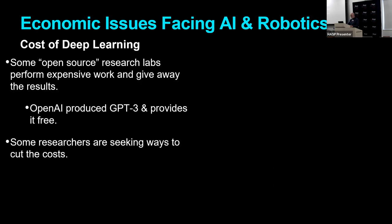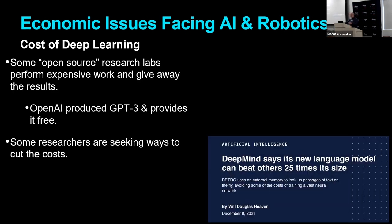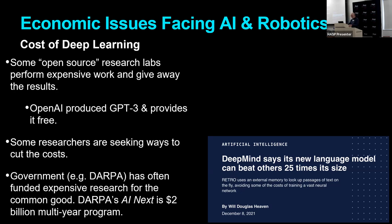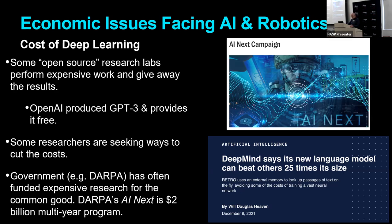Also, some researchers are seeking ways to cut the costs. Google's research lab in London, called DeepMind, has a new language model that can beat others 25 times its size, they claim. If size is proportionate to cost, that means their language model could cut the cost of one training run for GPT-3 from $12 million to maybe half a million — still a little too rich for my blood, but a lot of organizations could afford that. Also, government has often funded expensive research for the common good. DARPA's AI Next program is a $2 billion multi-year program aiming to provide funding for fundamental research to improve AI capabilities and cut the cost. So there may be some answers to the cost of deep learning.